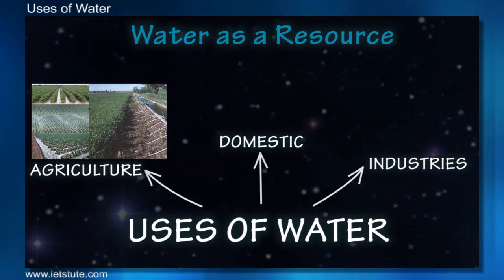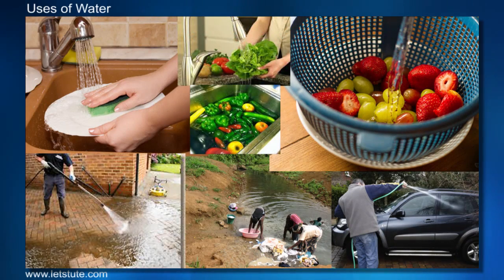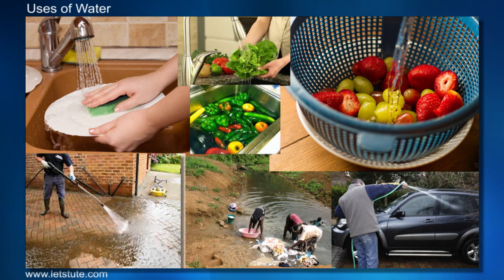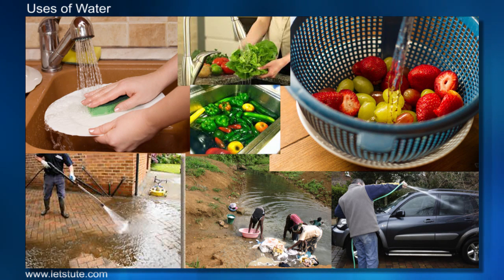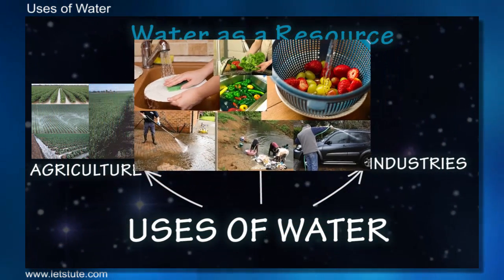Talking about domestic use, it simply implies water which is required for household purposes like drinking, washing, cooking, watering plants, etc. This water reaches our homes through various distribution systems.